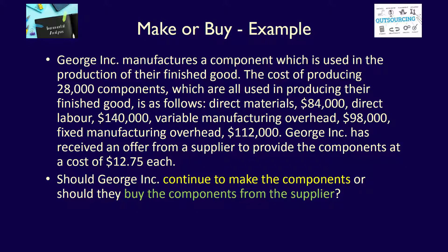Step 1 is to explicitly state the alternatives. In this case, the alternatives are to either continue to make the component in-house or buy it from a supplier. Step 2 is to determine which costs are relevant. Remember that relevant costs are ones that change between alternatives and are future costs. Let's analyze each cost individually and indicate if it applies to the make or the buy decision. We'll highlight costs incurred to make the component in yellow and costs incurred to buy the component in green.